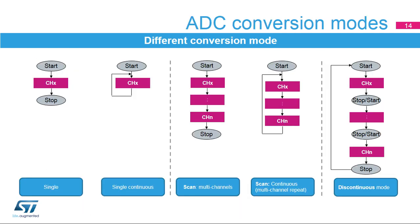The ADC supports several conversion modes. Single mode converts only one channel in single-shot or continuous mode. Scan mode converts a complete set of predefined programmed input channels in single-shot or continuous mode. Discontinuous mode converts only a single channel at each trigger signal from the list of predefined programmed channel inputs.